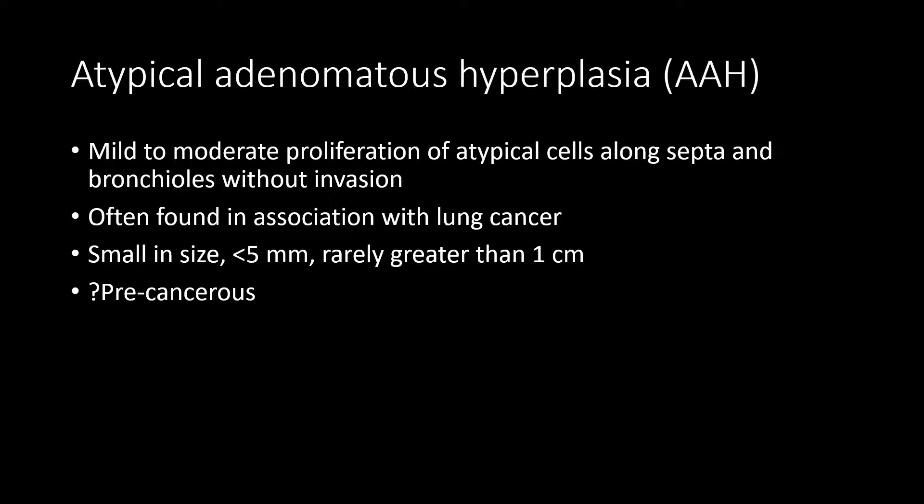Atypical adenomatous hyperplasia, or AAH, represents a multimodal proliferation of atypical cells along septa and bronchioles without invasion. These are often found in association with lung cancers, seen as single or multiple lesions in the same or different lobes. They're typically small, less than five millimeters, and rarely larger than one centimeter, and they almost always appear subsolid on CT. Whether these lesions actually turn into cancer is still uncertain, but they are seen more frequently in people who do have cancers.